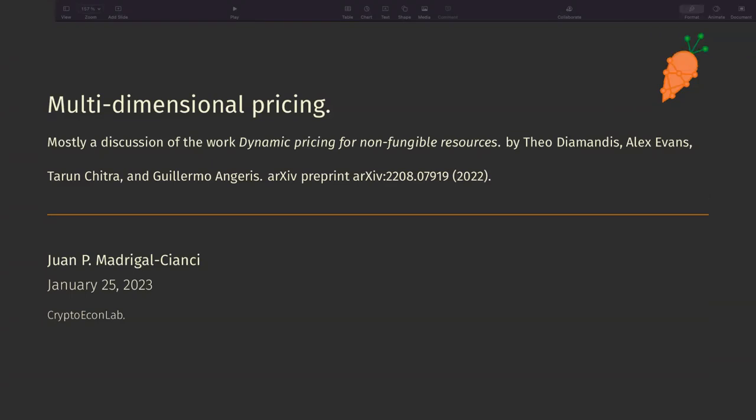Today I'll be talking about multidimensional pricing. This is mostly a discussion of the work Dynamic Pricing for Non-Fungible Resources by Theo Diamandis and collaborators. The idea is to explore this paper and discuss how we can leverage the knowledge from this paper to our case.